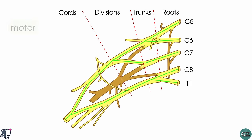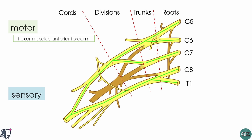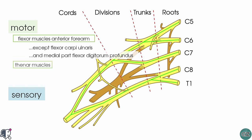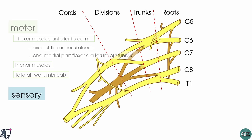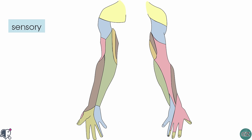The median nerve has both motor and sensory function. In terms of motor function, it innervates the flexor muscles in the anterior compartment of the forearm, except for the flexor carpi ulnaris and the medial half or ulnar half of the flexor digitorum profundus. These two muscles are innervated by the ulnar nerve. Within the hand, the median nerve supplies innervation to the thenar muscles and the lateral two lumbricals.